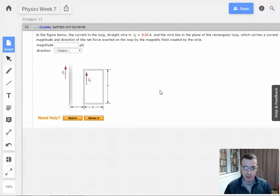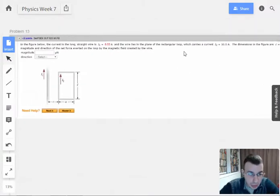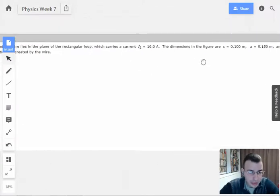Week 7, problem 13. In the figure below, the current in the long straight wire is 8 amps, and the wire lies in the plane of the rectangular loop which carries a current of 10 amps.